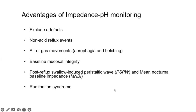The advantages of impedance pH monitoring compared to pH-metry alone cover six different issues: impedance is useful to exclude artifacts, to detect non-acid reflux events, to characterize air or gas movements (aerophagia or belching), to provide information about mucosal integrity, to provide information about clearance through the PSPW parameter, and more recently to describe a pattern of impedance pH-metry typical of rumination syndrome. Let's go one by one.